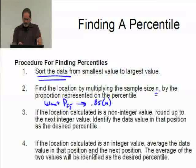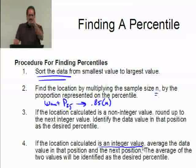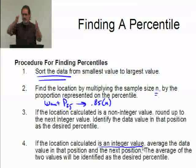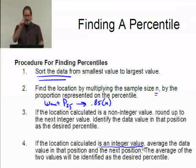If the location calculated is an integer value, it actually turns out to be a whole number, then I'm going to take that value. Let's say I ended up on the 85th position, I'm going to take the data value in the 85th position, take the next data value in the 86th position, and average the two. That's how I'm going to identify the percentile. And we did that with the median, didn't we? For even number of values in the median, the location n plus 1 over 2, well, what that ended up with is a value in the middle, and we took values on both sides and averaged them.